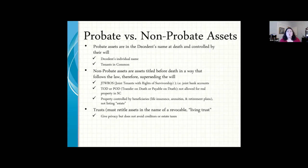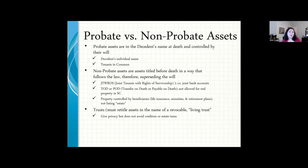When you pass away, if there's no beneficiary named on your IRA money, it goes to your estate — and that accelerates all the income taxes you haven't paid, requiring it to be taken out over a five-year period. If you leave it to a named beneficiary, they have more choices. Under the SECURE Act, they'd have to take it out over a 10-year period, but that's still better than five years.